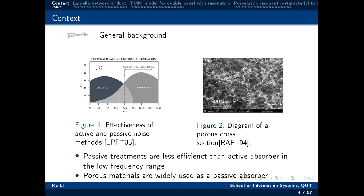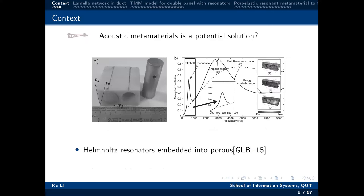I'd like to give you some background. As we know, passive treatment is less efficient than active absorbers in the low-frequency range. Active treatment is better, but it's limited by energy and cost. So passive treatment is still quite important for this region. Porous materials are widely used as passive absorbers. We would like to see if active meta-material is a potential solution to improve absorption in the low frequency.